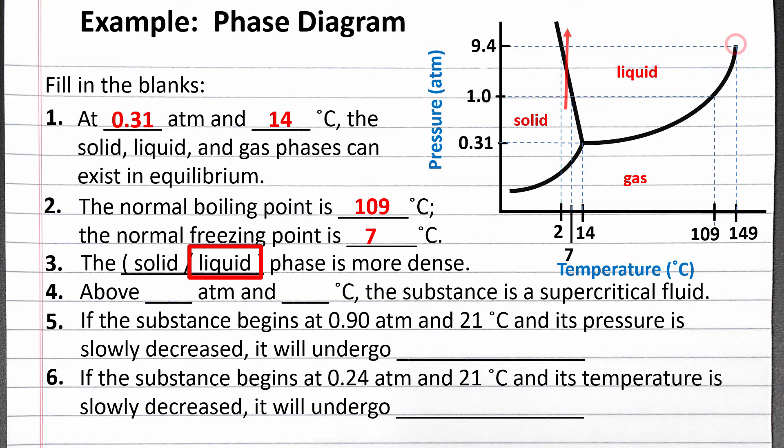For our next statement, we want to know above what pressure and temperature we will have a supercritical fluid. This is the critical point. The critical pressure is 9.4 atmospheres and the critical temperature is 149 degrees Celsius.